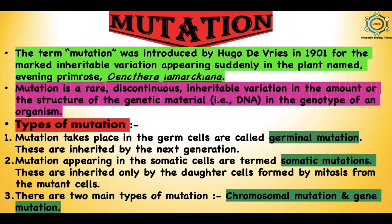Mutation is a change that occurs in DNA sequences either due to mistakes when DNA is copied or as a result of environmental factors such as UV light and cigarette smoke. Over a lifetime, DNA can undergo changes in the sequence of bases A, G, C, and T (adenine, guanine, cytosine, and thymine), resulting in changes in the proteins that are made. This can be a bad or a good thing, so mutations may be harmful or beneficial.